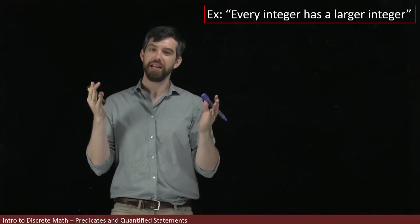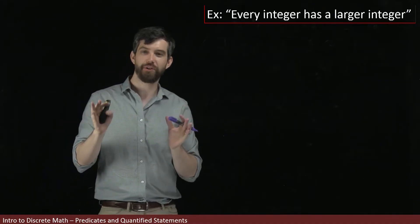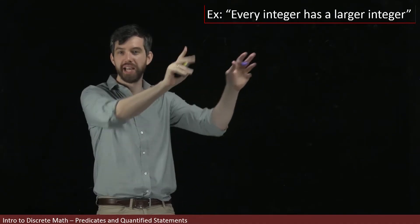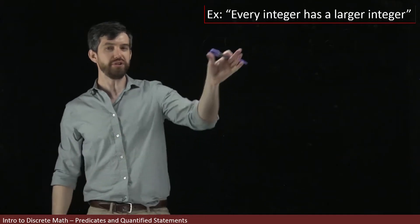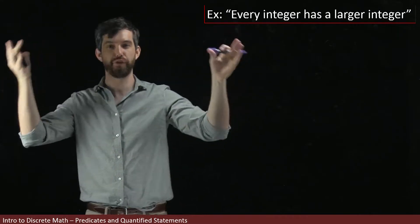Consider the statement, every integer has a larger integer. I think that there are actually two different quantifiers snuck in here. First of all, note that I've got the word every and every should be a big alarm bell that says we've got a for all.